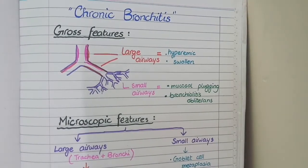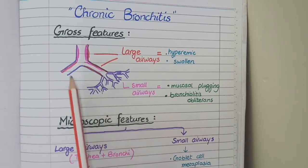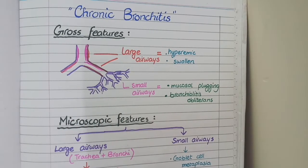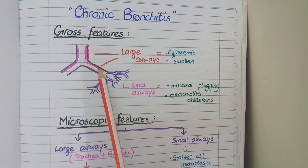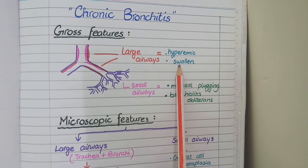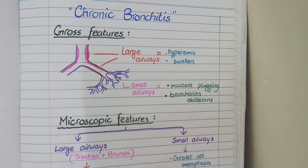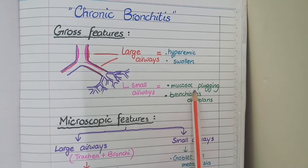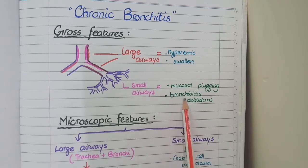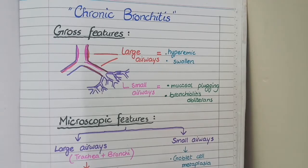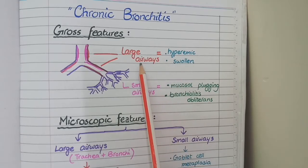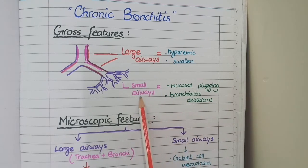Now let's come to the morphological features of chronic bronchitis. As it is a disease of both large airways and small airways, you see morphological changes at both levels. On gross specimen, the large airways — trachea and bronchi — become hyperemic and swollen, where hyperemia means increased redness due to inflammation. The small airways, which are bronchioles, get filled with mucous secretions known as mucosal plugging. When secretions are so excessive that they block the lumen of bronchioles, this is called bronchiolitis obliterans.